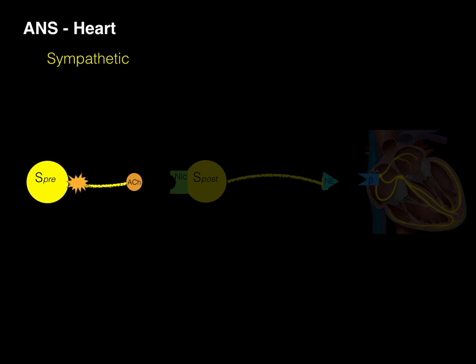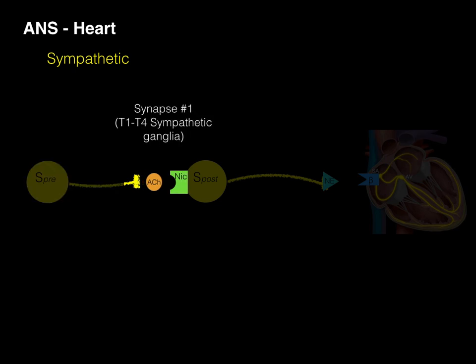An impulse conducts along that axon, and when it hits that terminal axon, it's going to release acetylcholine into synapse number one.